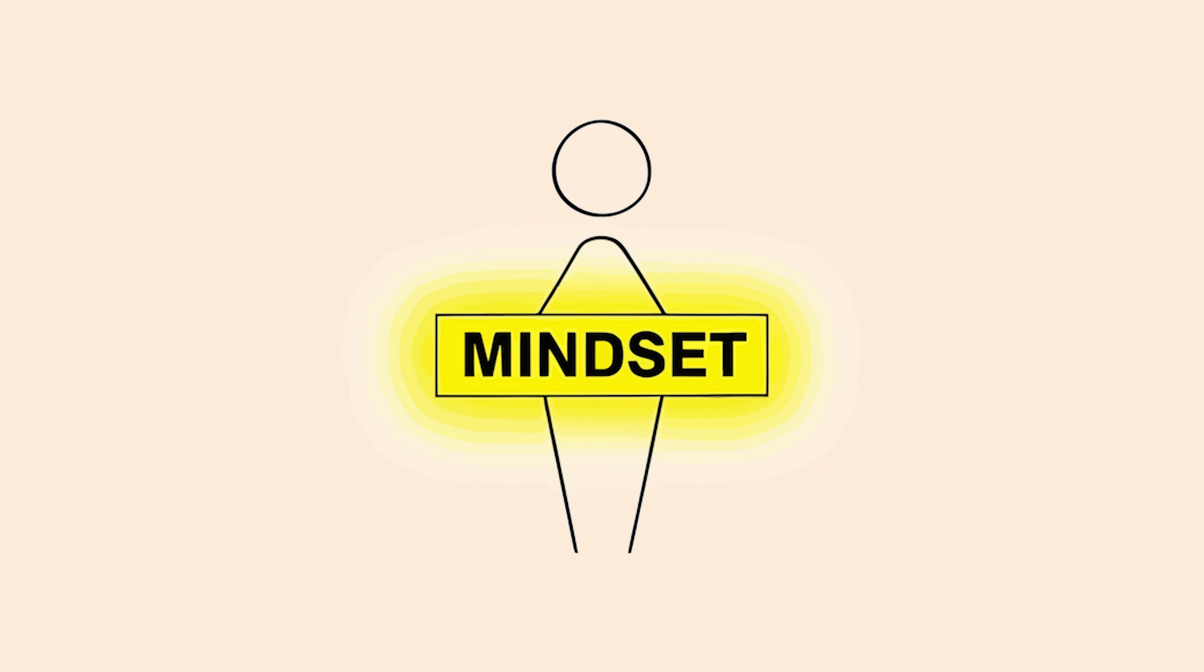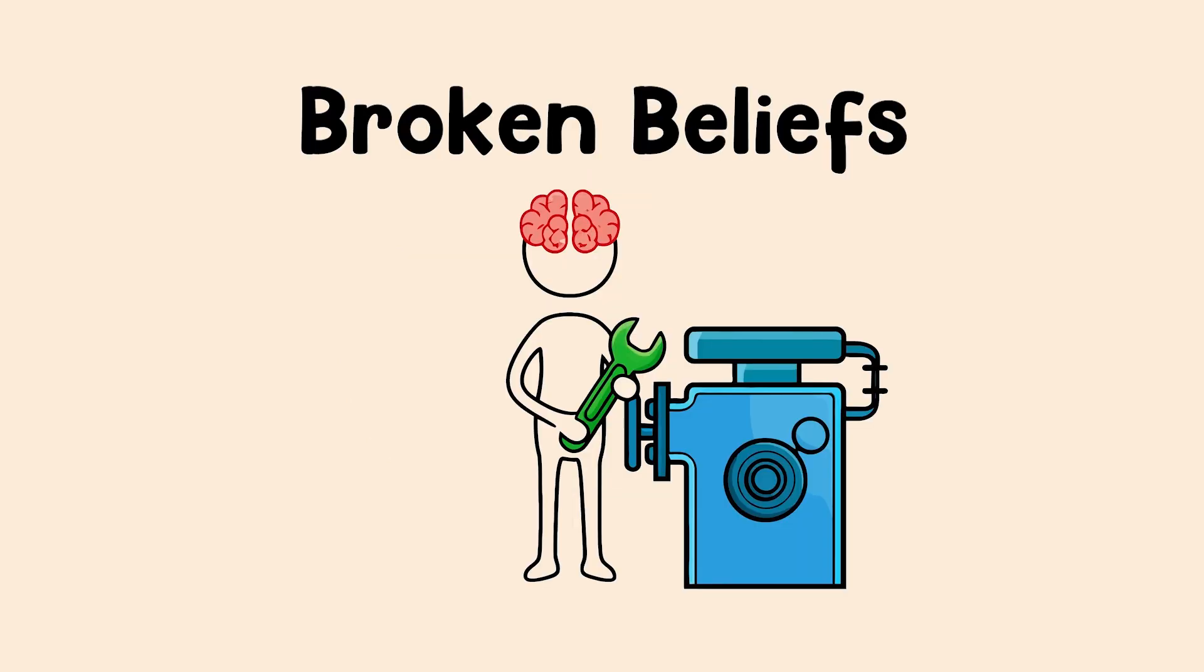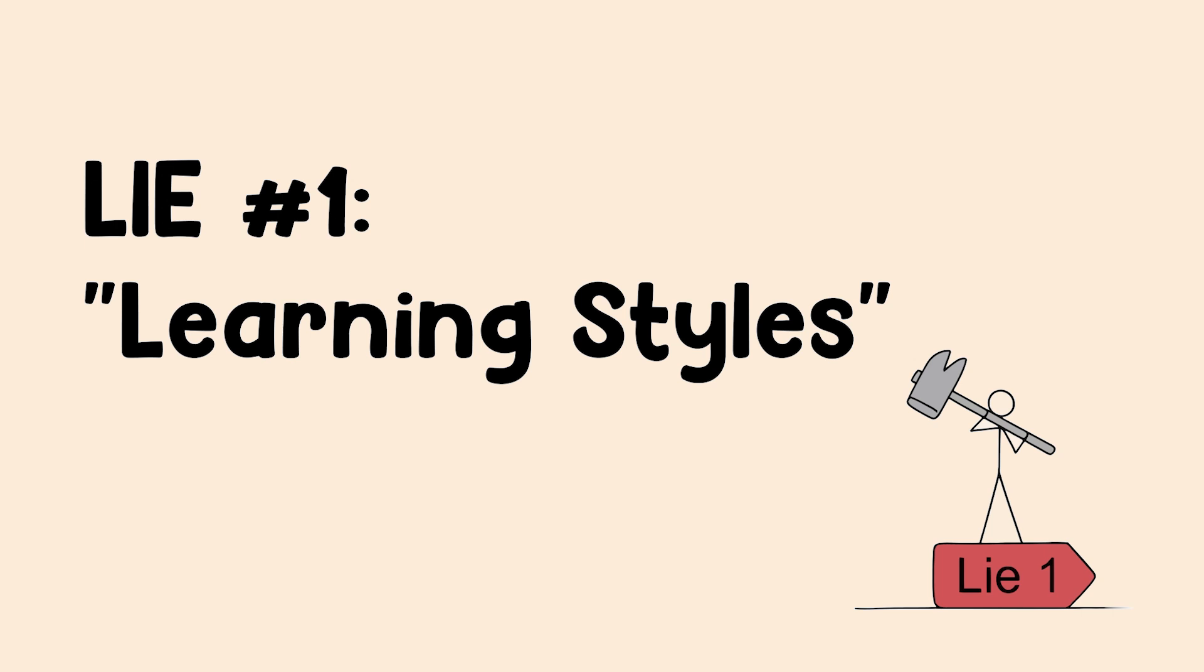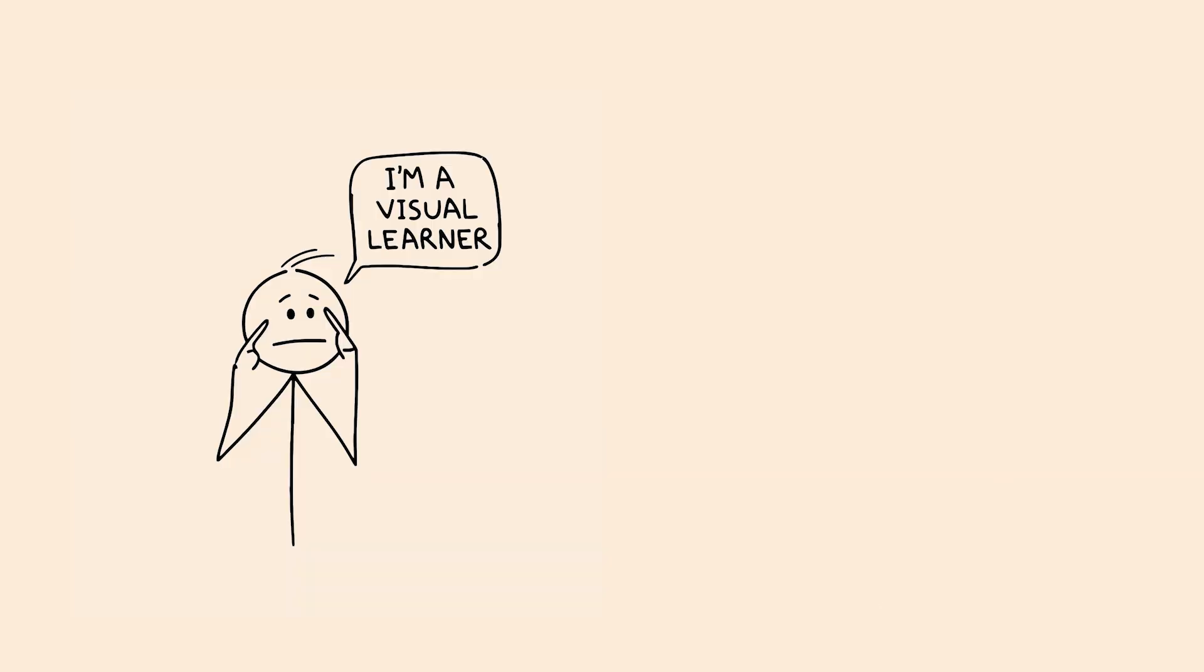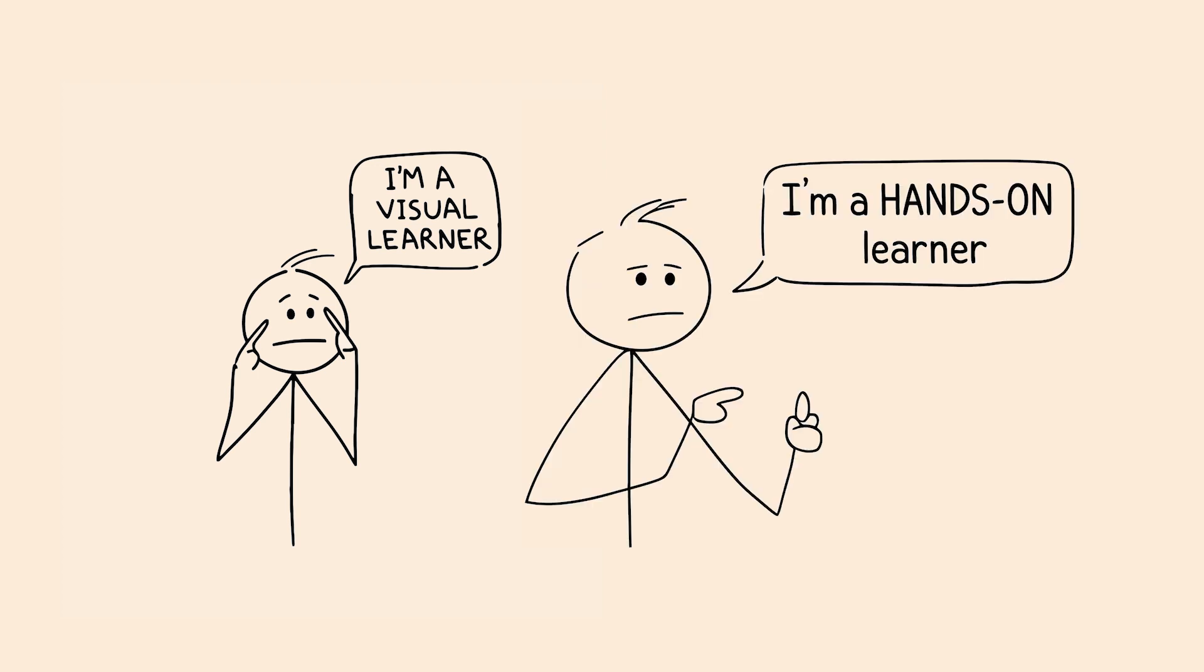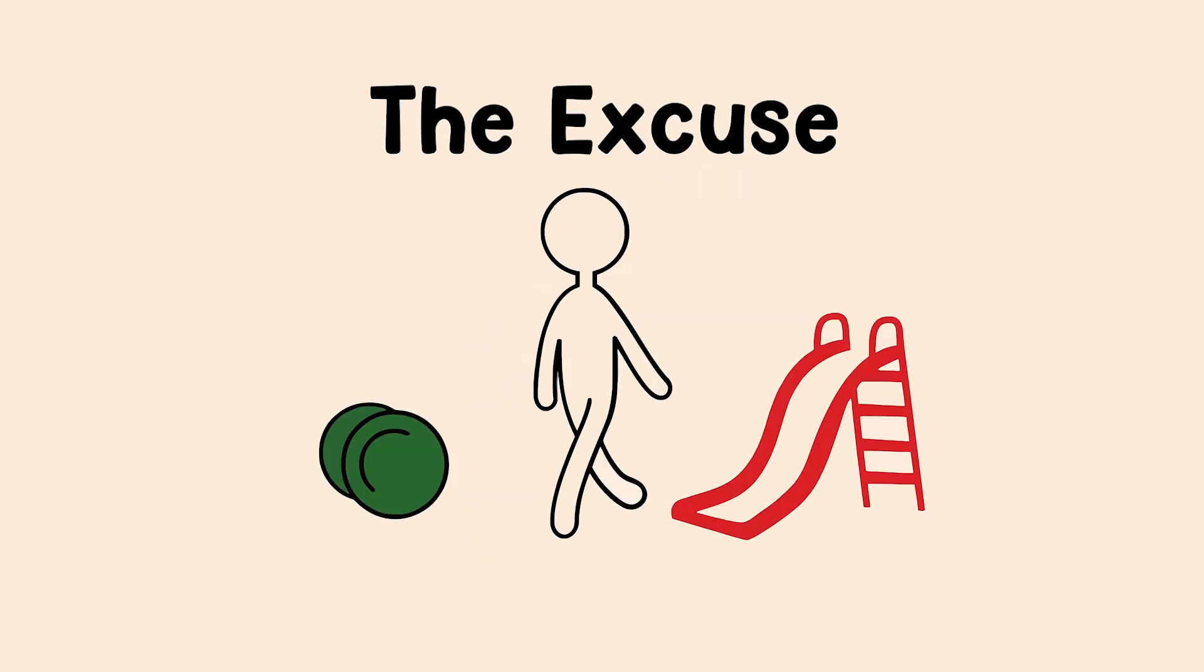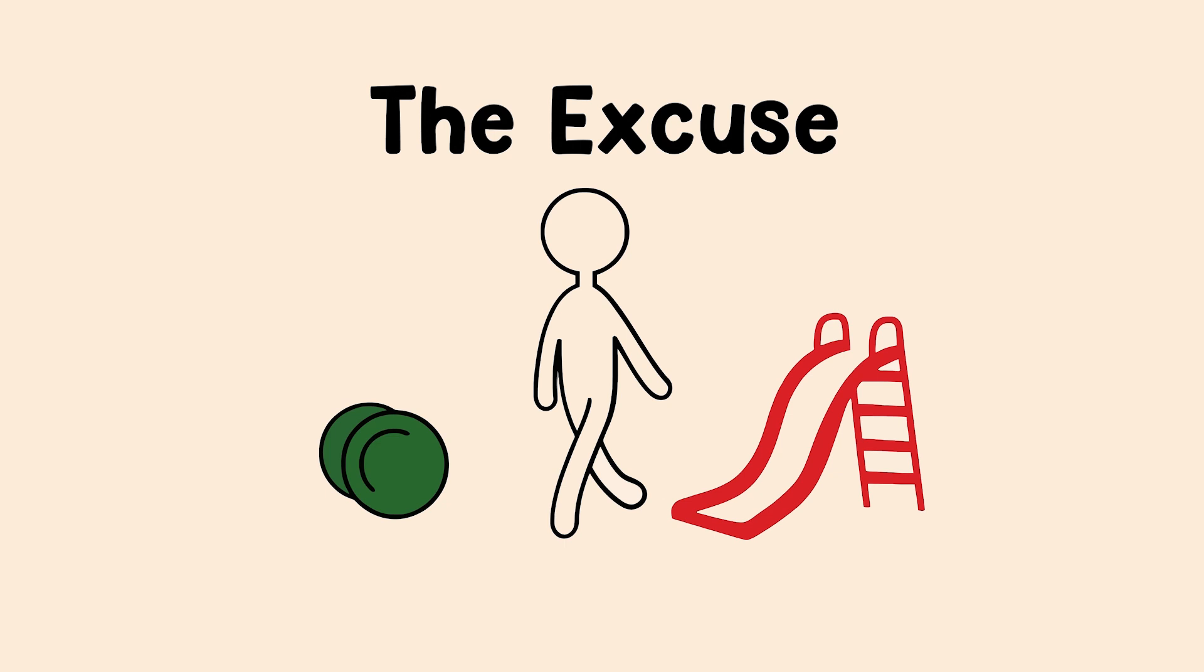Now, for the final and most important part. You can have the best system and the best tools in the world, but they won't work if your core beliefs about learning are broken. And there are two big lies we need to destroy right now. The first is the myth of learning styles. You've heard it. You've probably even said it: 'I'm a visual learner' or 'I'm a hands-on learner.' Here's the truth. Study after study after study has shown this idea is basically fiction. It's a trap. Believing it gives you an excuse to avoid the methods that feel hard, but are actually effective.